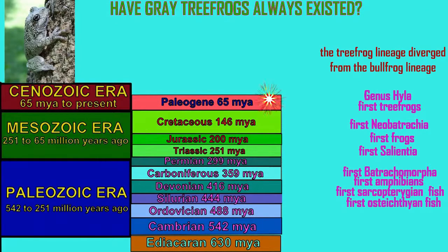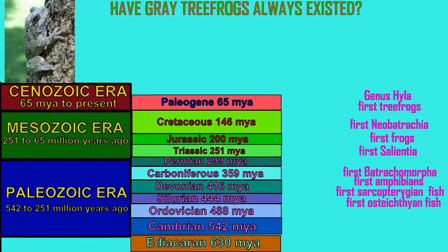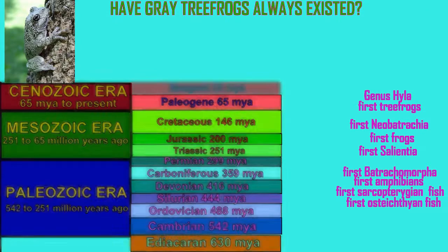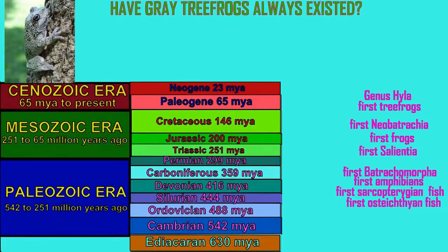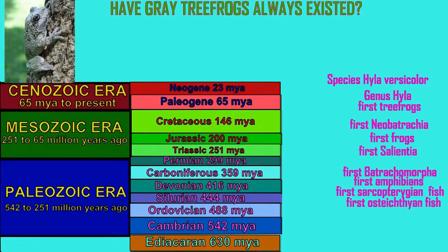No frogs of the suborder Neobatrachia before the Cretaceous. No tree frogs before the Paleogene. No tree frogs of the family Hylidae, no tree frogs of the subfamily Hylinae, or genus Hyla, or species Hyla versicolor, are known until later in the Cenozoic era.